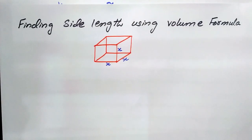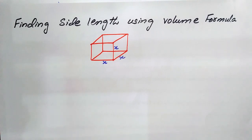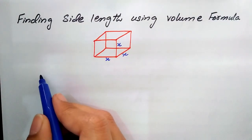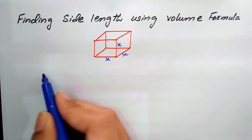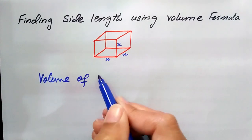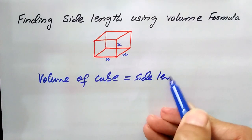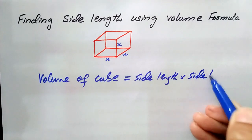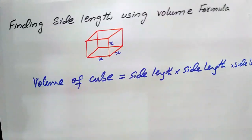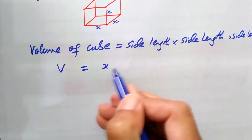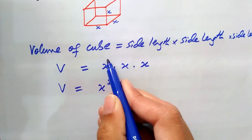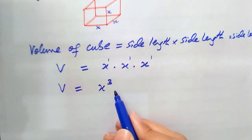Now if we need to find the side length of a cube using the volume formula: volume of a cube equals side length multiplied by side length multiplied by side length. So volume equals x times x times x, which becomes x cubed, since using the laws of exponents all the powers add together to make 3.